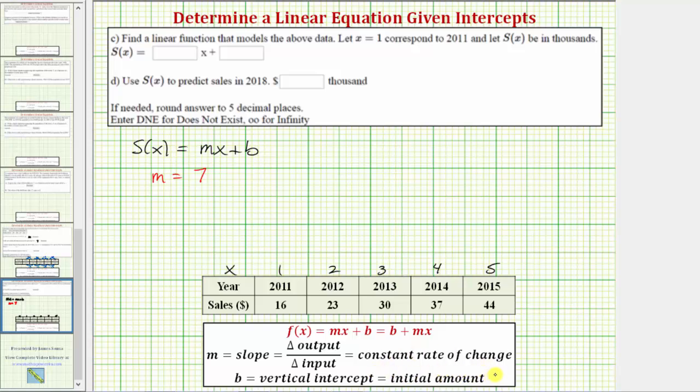We need to be careful about this, because a lot of times the first output value from the table is the initial or starting amount, but that's only true when the corresponding input is zero.